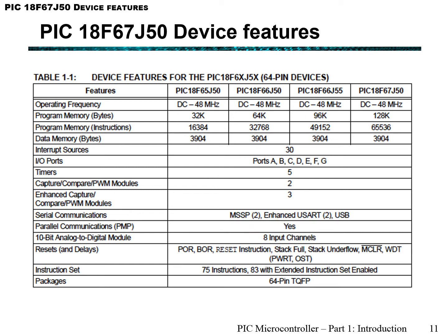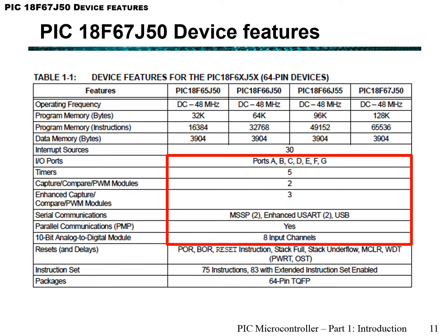Now let's move on to the device features for our specific PIC. The PIC we're using is PIC18F67J50, as you can see to your right. Out of all the PIC18 family, this PIC chip actually has the highest memory and has the highest amount of instructions. A few device features worth noting are the available ports, how many timers there are, how many modules there are, and the ADC module or the 10-bit analog to digital module.